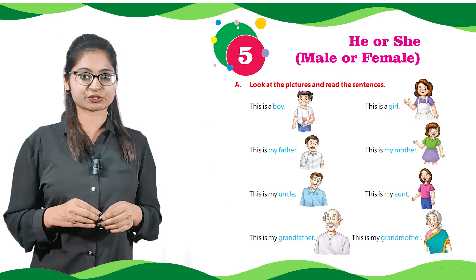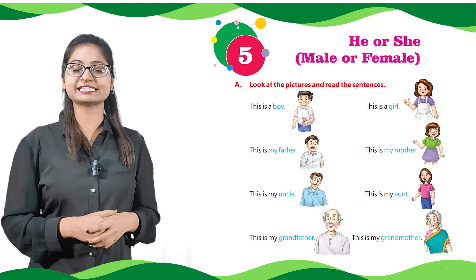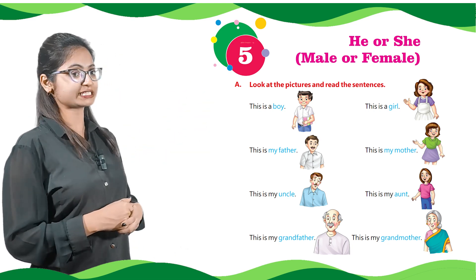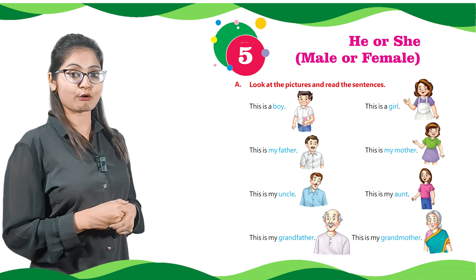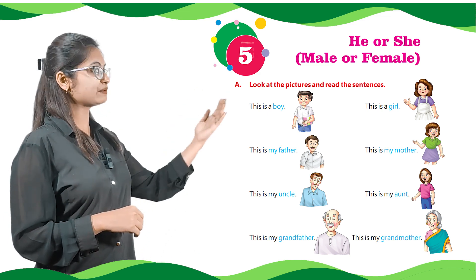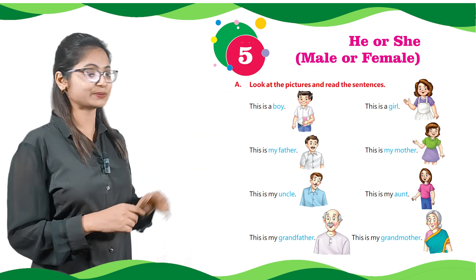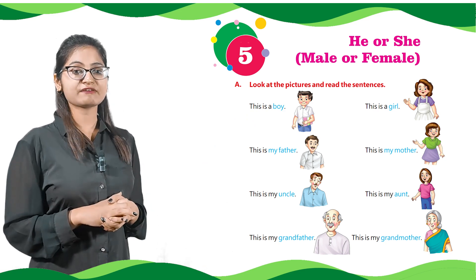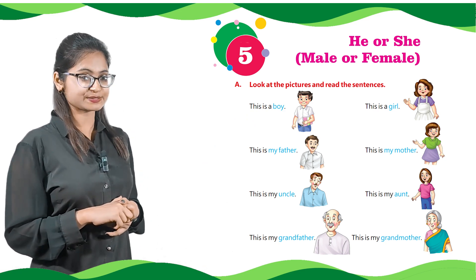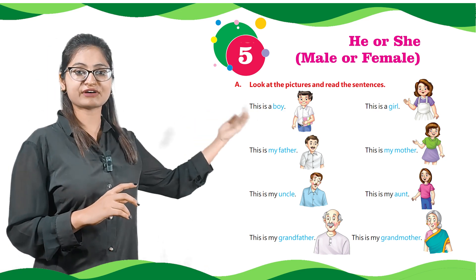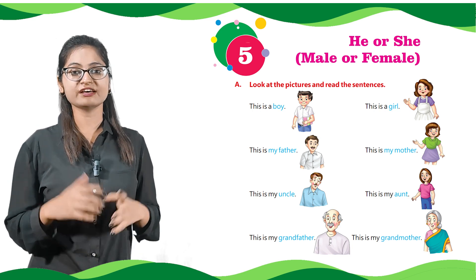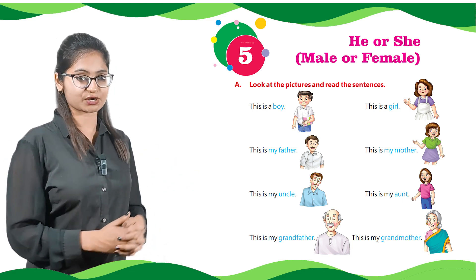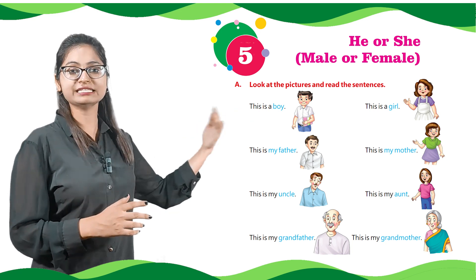Look at the pictures and read the sentences. We can see the picture of a boy — this is a boy. Next, we can see the picture of a girl — this is a girl. We have a picture of a man and there is written: this is my father. Next, we have a picture of a woman, so we will write: this is my mother.